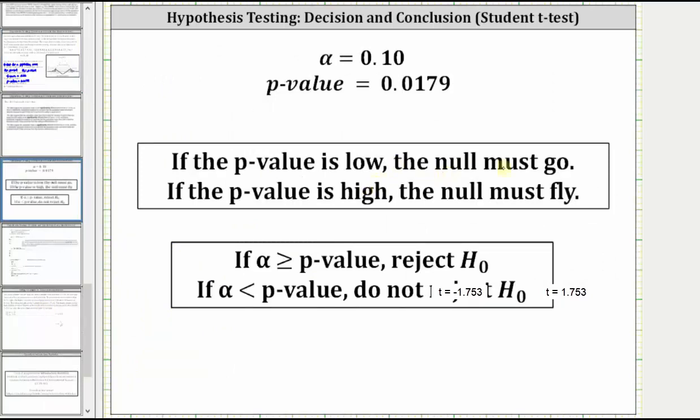And since the p-value is low, the null must go, or more formally, because the p-value is less than or equal to alpha, or because alpha is greater than or equal to the p-value, we reject the null hypothesis.